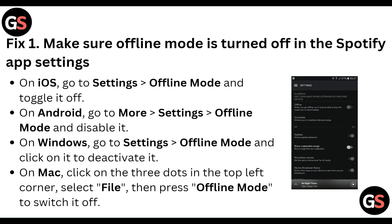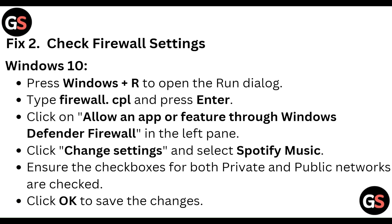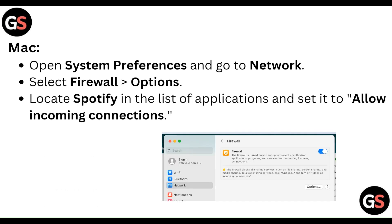Next, check the firewall settings. On Windows 10, press Windows + R to open the Run dialog, type firewall.cpl and press Enter. Click on 'Allow an app or feature through Windows Defender Firewall' in the left pane, click Change Settings, select Spotify Music, and ensure the checkboxes for both private and public networks are checked. Click OK to save the changes.